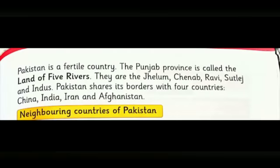Now turn the page and read with me. Pakistan is a fertile country — Pakistan ek zarkhhez mulk hai. Punjab province is called the land of five rivers — Punjab jo hai wo paanch daryaon ki sarzameen kehlata hai. The five rivers are: Jhelum, Chenab, Ravi, Sutlej, and Indus.